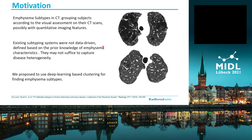Emphysema subtyping in CT is to group subjects according to the visual assessment on their CT scans, possibly with quantitative imaging features. On the right side, you see two cases of emphysema, where the emphysema can be seen as those low-intensity regions representing air trapping caused by the emphysema. The traditional way of defining subtyping systems were based on the location or the severity of the emphysema, but this approach was not data-driven. They were heavily based on prior knowledge of the emphysema characteristics, therefore they may not suffice to capture the heterogeneity.